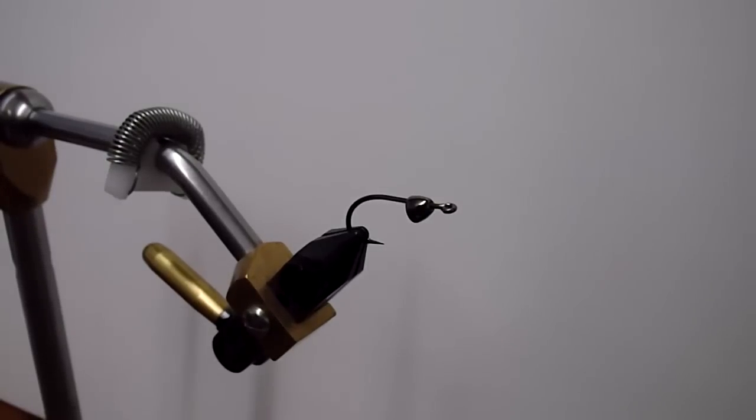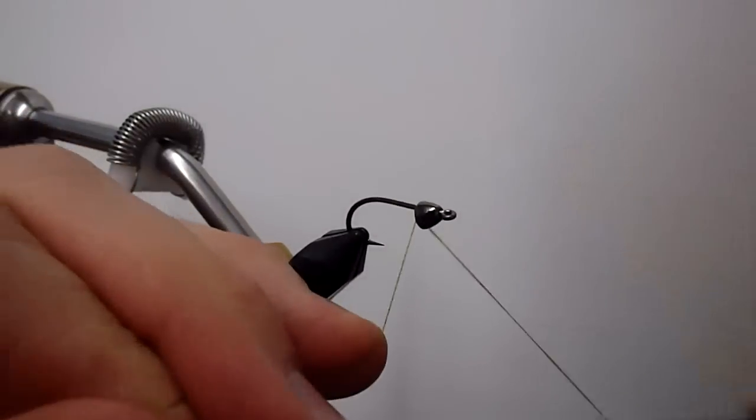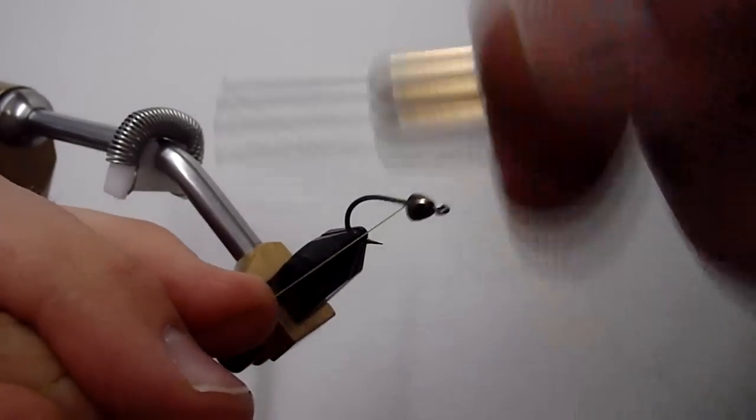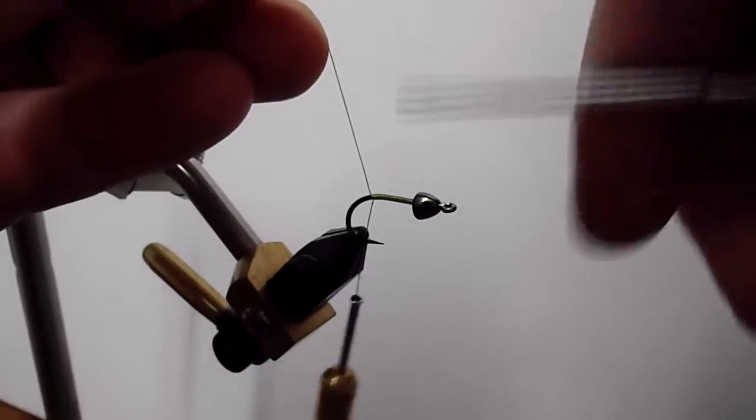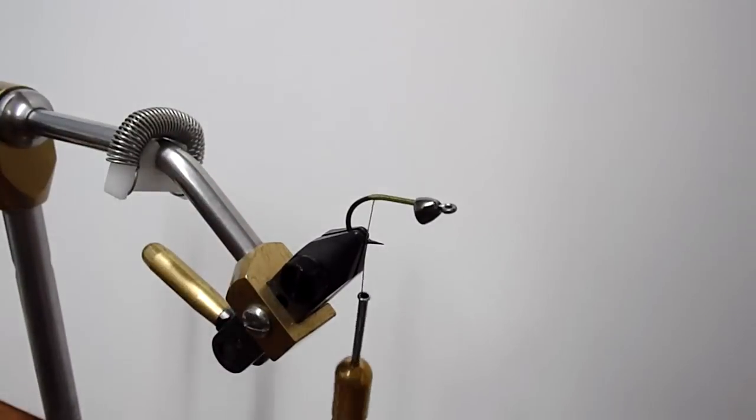So how we'll start this pattern today is we're going to take our thread and butt that right up against the back of the cone here, and we're going to take that back to the back bend of the hook. Go ahead and trim that off.